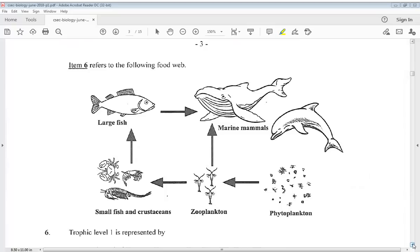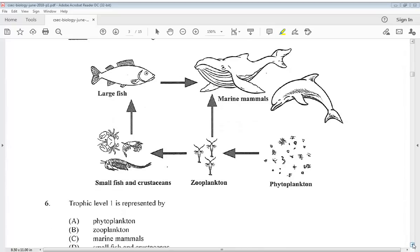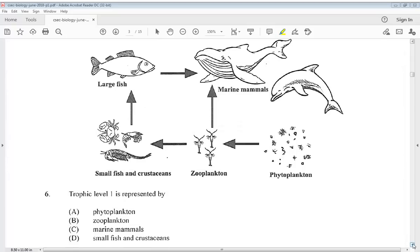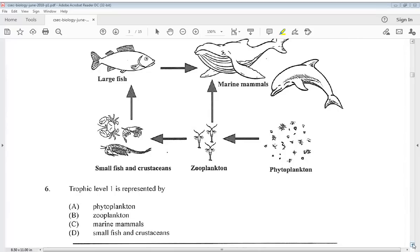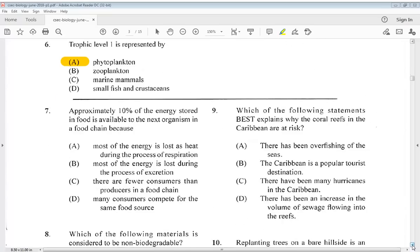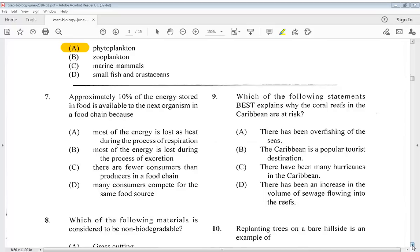Let's go to number six. Item six refers to the following food web. Six says, trophic level is represented by? We know the answer is A, phytoplankton. Seven says, approximately 10% of the energy stored in food is available to the next organism in a food chain. We know the answer is A. Most of the energy is lost as heat during the process of respiration.